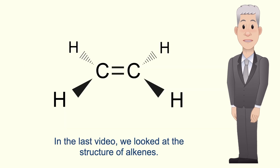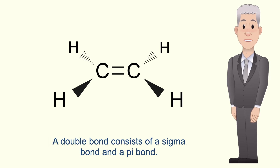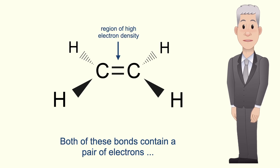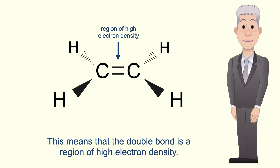In the last video we looked at the structure of alkenes. Remember that alkenes have at least one double bond, and a double bond consists of a sigma bond and a pi bond. Now both of these bonds contain a pair of electrons, so the double bond in alkenes actually consists of four electrons.